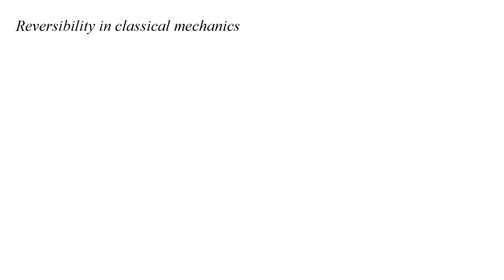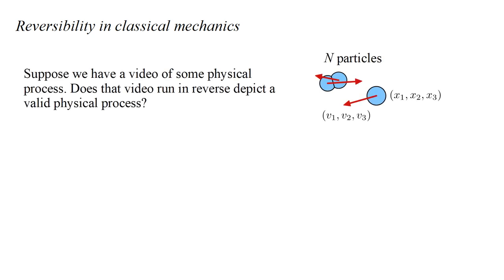This leads us to consider reversibility in classical mechanics at a more rigorous level. Consider a system of n particles. At a given time, each particle has a position and a velocity, each specified by three coordinates. For the first particle, let's call these x-one, two, and three, and v-one, two, and three. For the second particle, x-four, five, and six, and v-four, five, and six, and so on — all the way up to x-three-n and v-three-n.